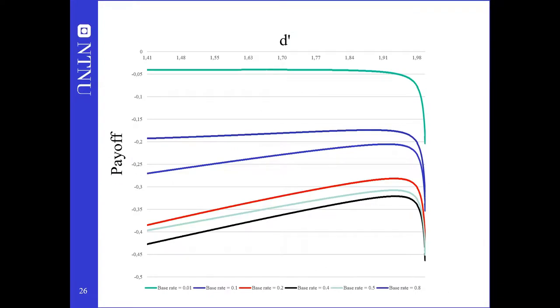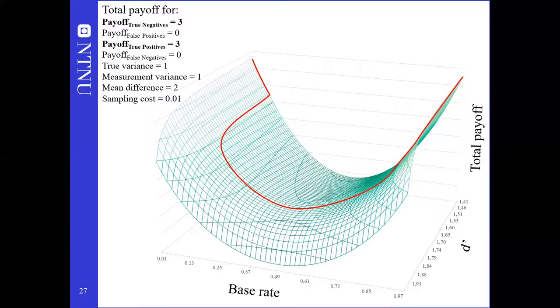Here we show the total payoff calculated as the sum of cost of mistakes, benefit of correct decisions, and sampling costs for a few different base rates. The uppermost line for a base rate of 0.01 shows that the maximal payoff is achieved by stopping to sample immediately after the first one. The lowest line for base rate 0.4, given the parameters in this example, shows a case where it pays to sample a lot. To make the relationship between these maxima and base rates clearer, we plot them as a surface. Then for each base rate, the optimal sampling corresponds to d' that provides the maximal payoff. These are shown here by the red line. This graph shows the case of symmetric payoff.